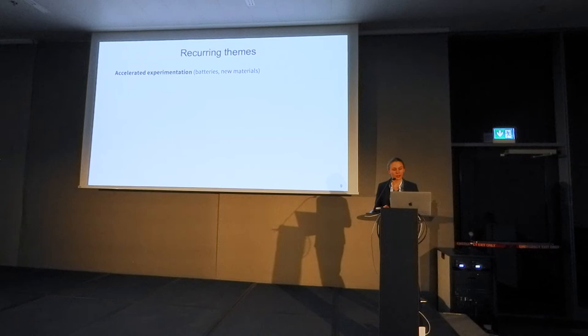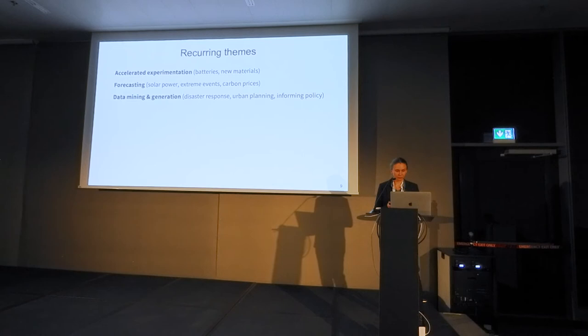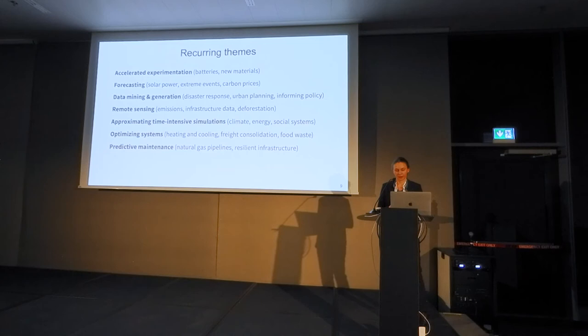For example, machine learning can help accelerate experimentation to develop better batteries, and it can help with forecasting to integrate renewables on the grid. It can provide data to policymakers, which is essential for climate mitigation and adaptation strategies so they can make better-informed decisions. Related to that, remote sensing can be improved with machine learning. ML can also be used for accelerating simulations, optimizing systems, and for predictive maintenance of low-carbon infrastructure.